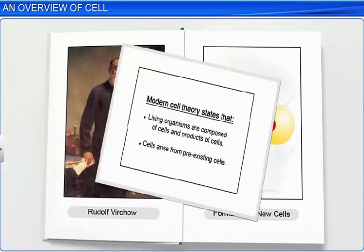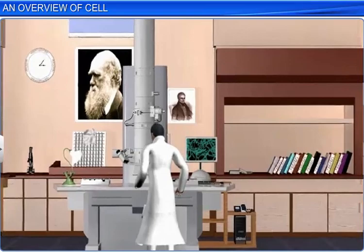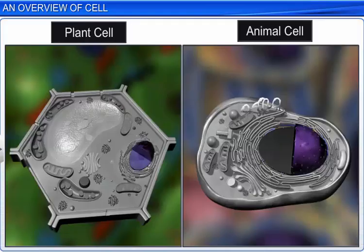Cell research received a further boost with the invention of the electron microscope, as it enabled scientists to observe the structure of the cell. They observed that the structure of a cell varies in plants and animals. A plant cell, for instance,